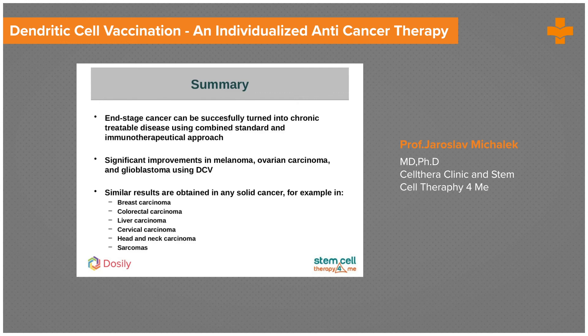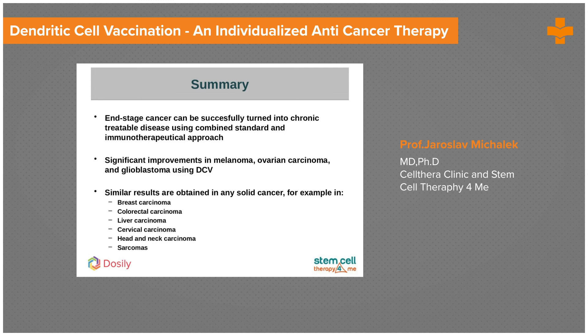To summarize, even end-stage cancer patients can be successfully converted to a chronic and stable disease state. Although in some cases we are not able to completely eradicate cancer with dendritic cell vaccination, for patients with end-stage cancer and no standard treatment options, this represents a meaningful contribution to improved health. We have also seen significant improvements in melanoma and ovarian carcinoma patients using dendritic cell vaccination, and we are applying this vaccine across most cancer types with very nice results. We don't rely only on dendritic cell vaccination, but rather on complex support of the immune system in the fight against cancer.